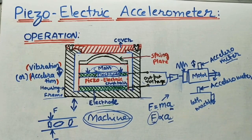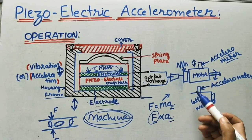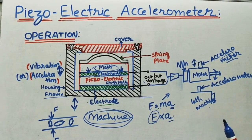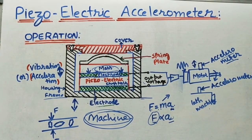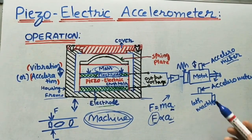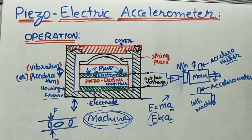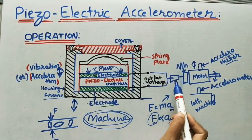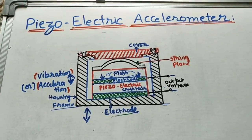The applications of this piezoelectric accelerometer: we can measure the vibrations of motors, machines, drilling machines, lathe machines, and sometimes in vehicles also. Advantages: it is very small in size, easy to install at any place, its cost is also less, and it is very sensitive. We can use it for a wide range of vibrations and it gives correct readings.